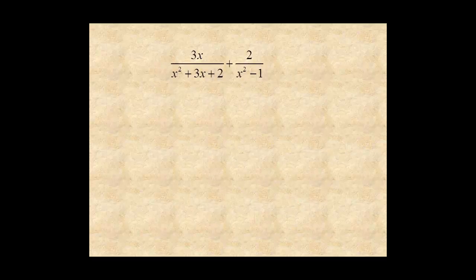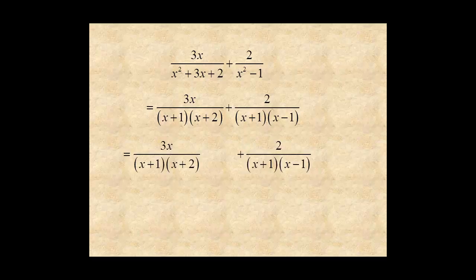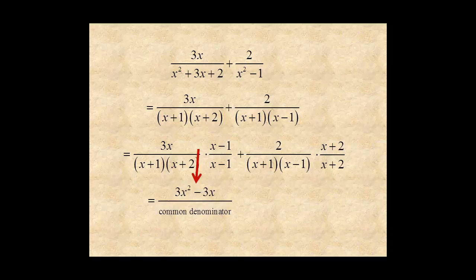Add these expressions in the same way. Factor both denominators. Notice they have a common factor of x plus 1. To add, the first term needs a factor of x minus 1, and the second term needs a factor of x plus 2. Then multiply the numerators: 3x times x minus 1 is 3x squared minus 3x, and 2 times x plus 2 is 2x plus 4.